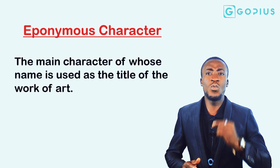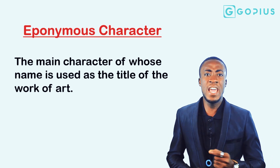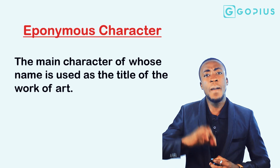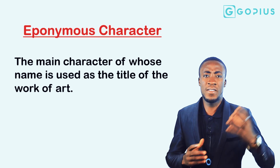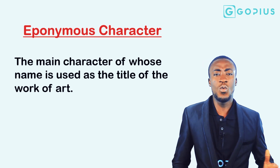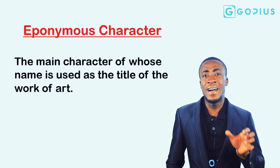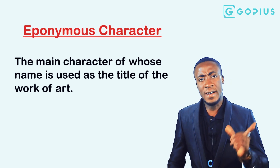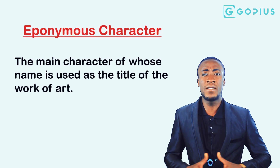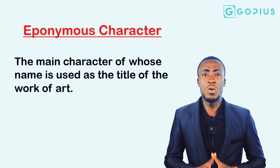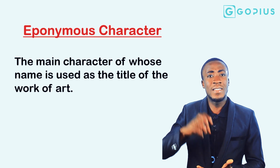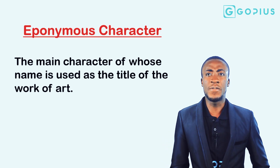Another important type of character is the eponymous character — that character after whom the title of the work is named. The eponym is the character after whom the work of art is named. All of Shakespeare's tragic plays are attributed to an eponym: Hamlet, Julius Caesar, Macbeth, Romeo and Juliet, and Othello are all eponymous characters because the works of art are named after them.